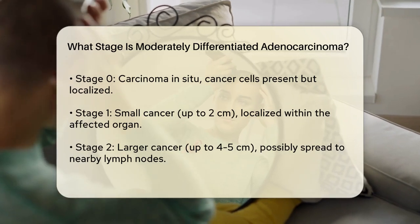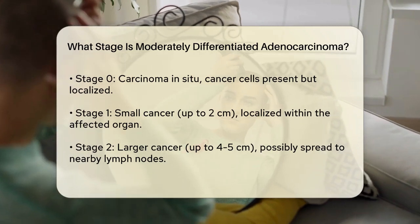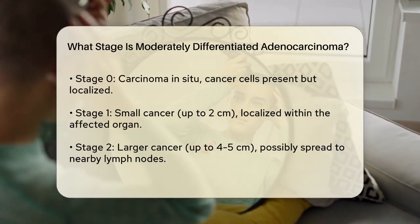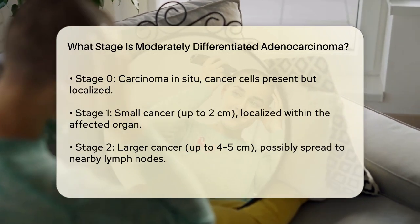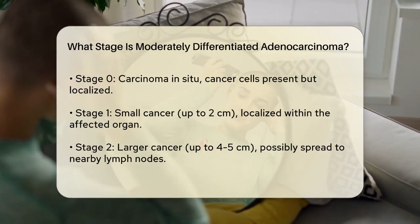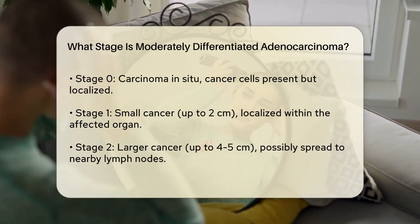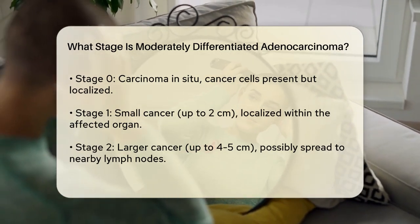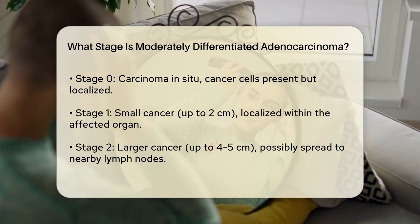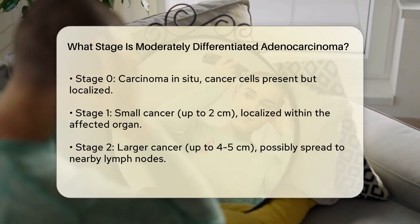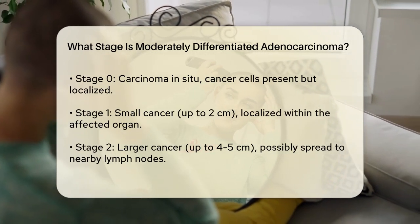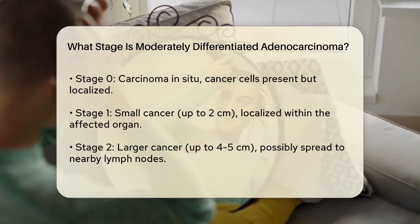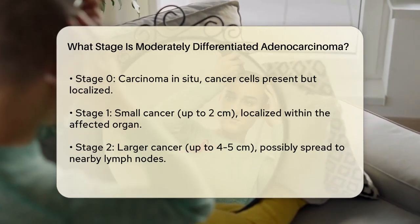Stage 3, the cancer has grown beyond the organ it started in, involving nearby tissues and several lymph nodes, with possible metastases. Stage 4, the cancer has spread to other organs and lymph nodes, often referred to as metastatic cancer.